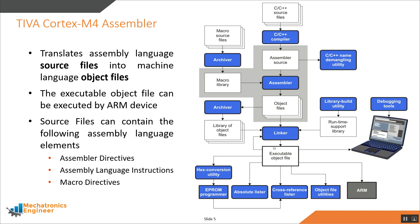These executable object files can be executed by ARM devices. The ARM assembler source files can contain the following assembly language elements: assembler directives, assembly language instructions, and macro directives.